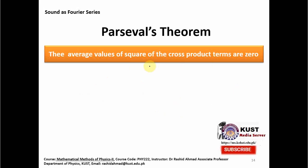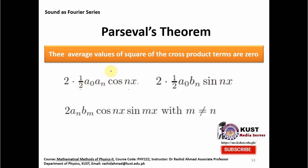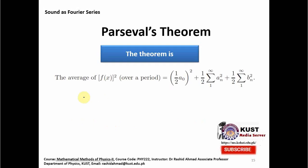The cross product terms — terms involving both sine and cosine, and terms with m not equal to n — all go to zero when averaged. Therefore, Parseval's theorem states that the average of the square of the function over a particular period equals the sum of the average of the first term squared, plus the second term squared, plus the third term squared — connecting it directly to the Fourier coefficients.